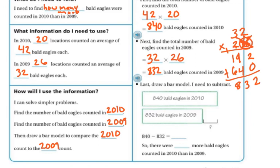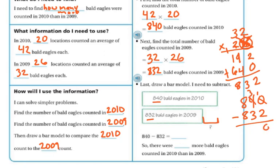Now I'm going to draw my bar model. In 2010 I had 840, and in 2009 I had 832, so we need to find the difference. Taking 840 minus 832 — I can't take 0 from 2, so I regroup: 10 minus 2 is 8, 3 minus 3 is 0, 8 minus 8 is 0. So 840 minus 832 is 8. There were 8 more bald eagles in 2010 than in 2009.